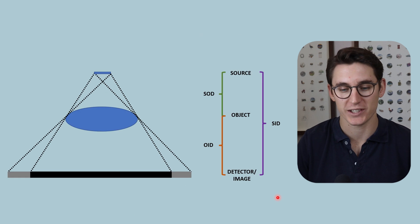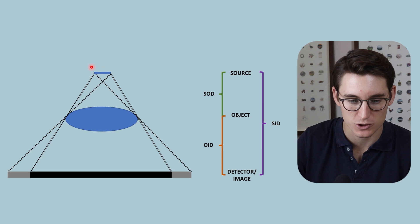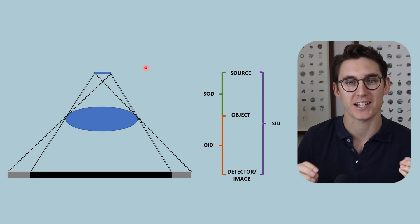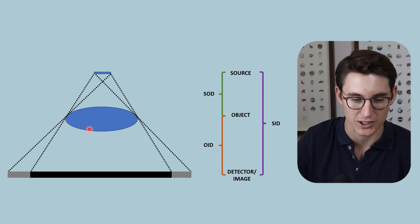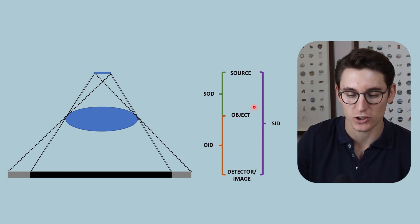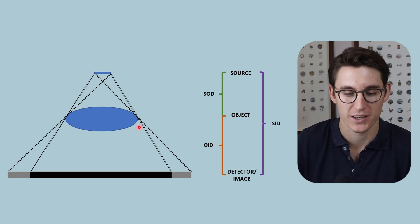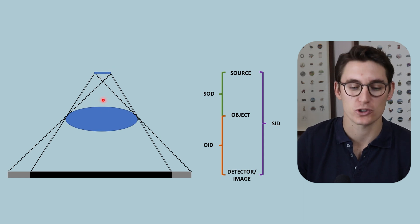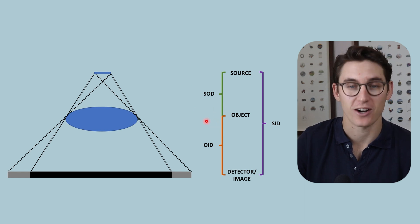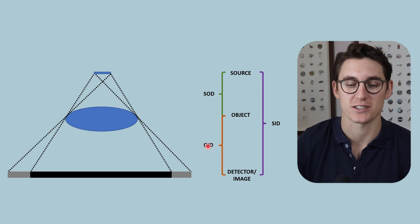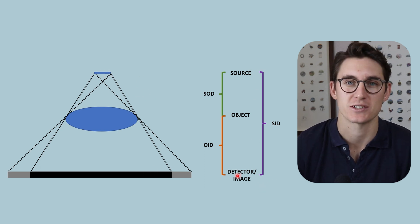In order to understand this, we need to define a couple of terms. The first is what's known as our source — that's the focal spot, where we're producing X-rays via Bremsstrahlung and characteristic radiation, and those X-rays are heading out towards our patient. Our patient in these equations is what's known as the object, and our detector is what's known as the detector or the image. The distance between our focal spot and the patient is the source to object distance, the distance between our object and the detector is our object to image distance, and the total distance from the source to the detector is our source to image distance.